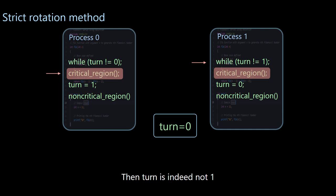Then turn is indeed not 1. So we have been waiting in this line in a loop. In this way, mutual exclusion is achieved.